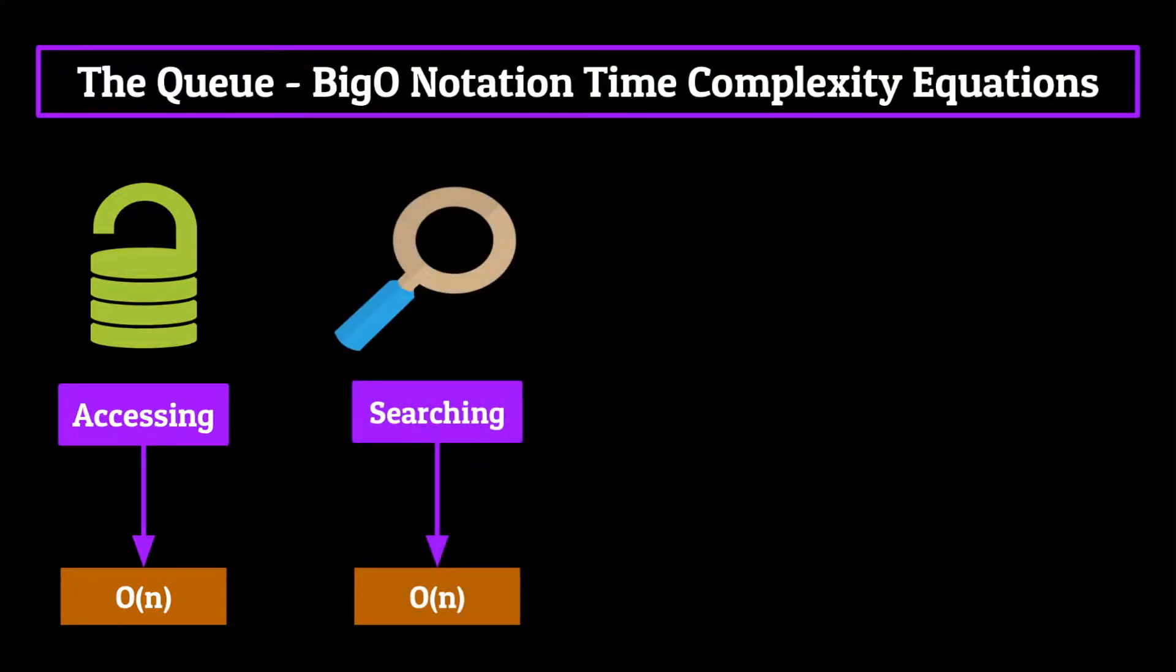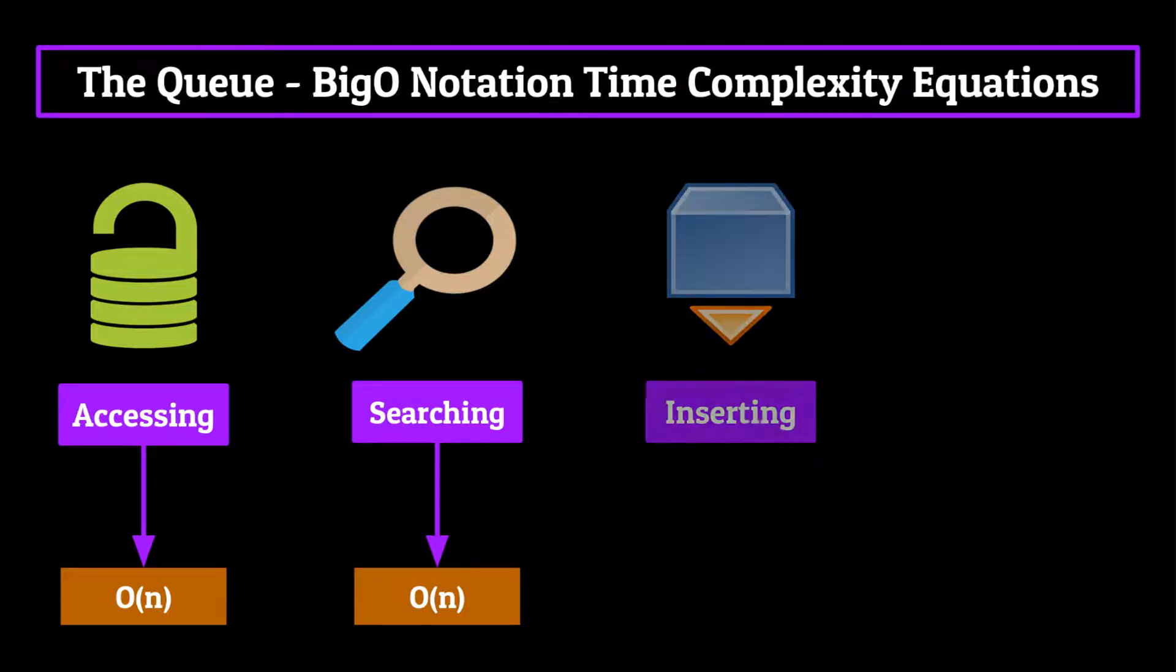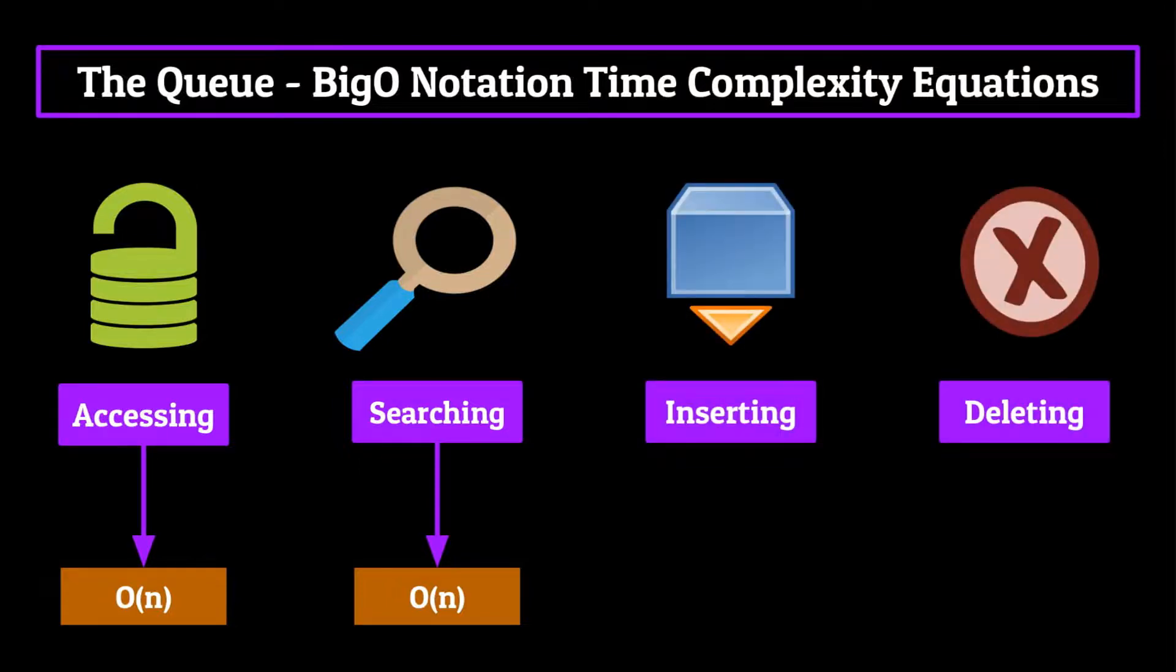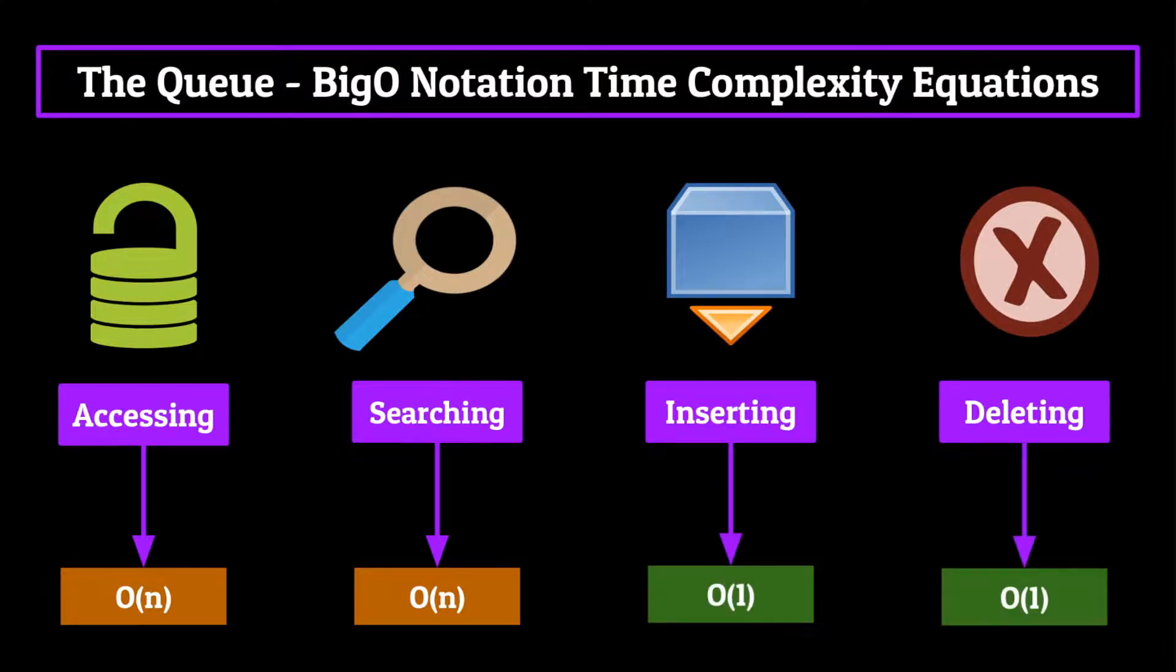Now searching is going to be O(n) for the same exact reason. Trying to find an element contained at the tail of the queue requires you to iterate across that entire queue to check for it. So in that scenario, we have to check every element within that queue of size N, making the time complexity O(n). Now inserting and deleting to and from a queue are both going to be an instantaneous O(1) because, just like with the stack, we're only ever enqueuing at a single point, and we're only ever dequeuing at a single point. Meaning it's never going to matter how large the size of the queue is, it'll be the same number of operations for any magnitude.